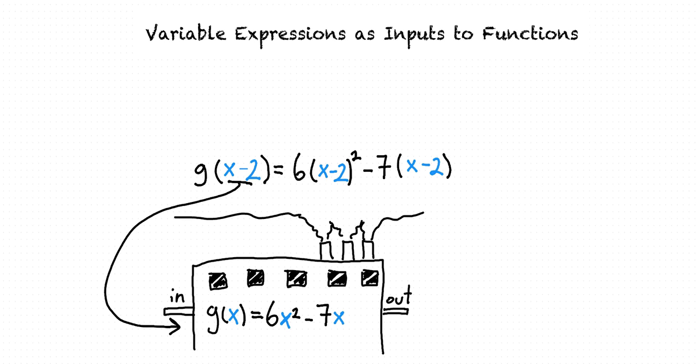When we're simplifying this, we have to remember a few things. First of all, this 7 is going to be distributed to both of the terms inside of our parentheses. And also, before we distribute the 6 into this expression, we need to square it. When we do that, we see that our expression becomes 6 times (x squared minus 4x plus 4) minus 7x plus 14.